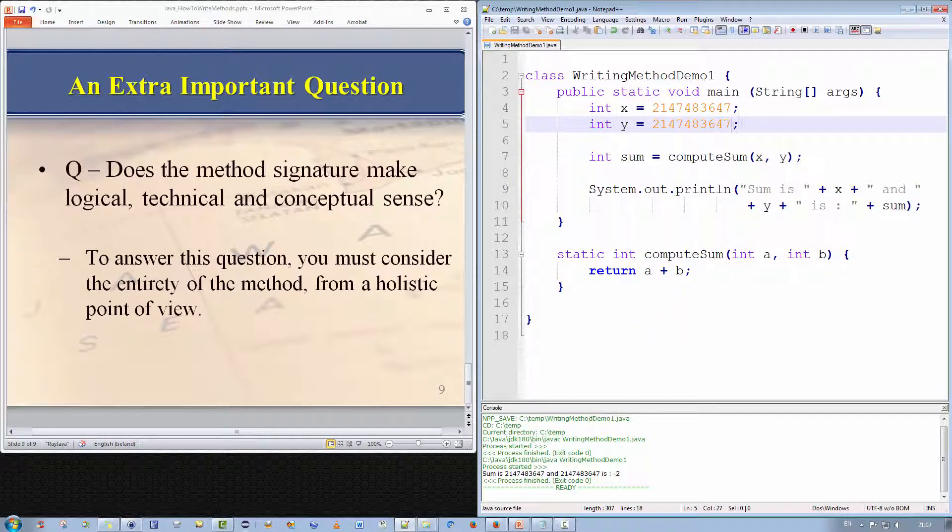To ensure the method returns the right result, we must change the return type of the method from an int to the primitive data type long. So compute sum returns an int. We're going to change that to a long. Okay, this sounds right. A long is 8 bytes and integer is 4. So a long should be able to hold the correct value.